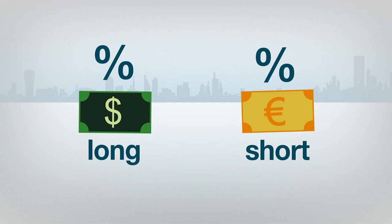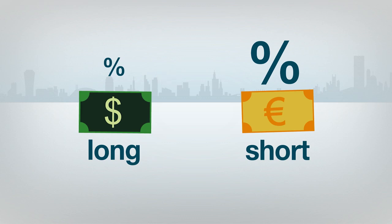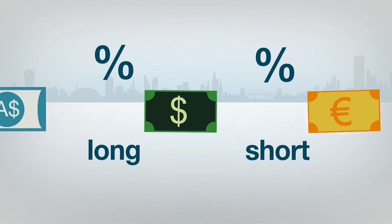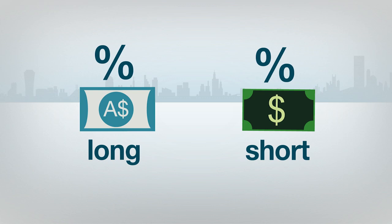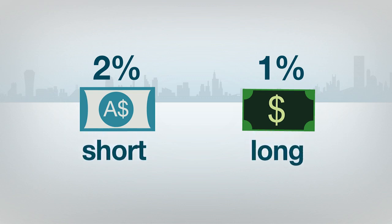In general, an investor receives a credit if the currency he is long has a higher interest rate than the currency he is short. Conversely, an investor is debited if the currency he is long has a lower interest rate than the currency he is short. For example, suppose an investor has a position in the Australian dollar versus the US dollar currency pair. If the overnight lending rate for the AUD is 2% and for the USD is 1%, and the investor is long the AUD-USD pair — meaning long the AUD and short the USD — he will receive a credit. However, if he was short the AUD-USD pair, he'd pay the debit because he is short the currency with the higher interest rate.